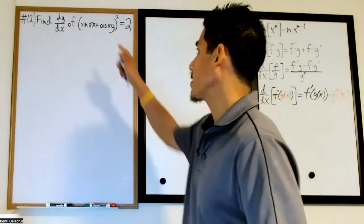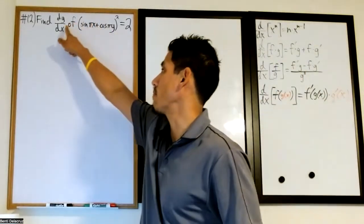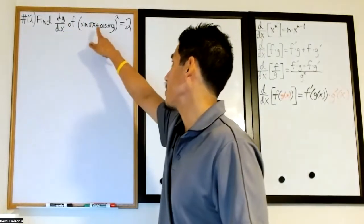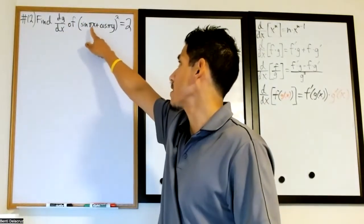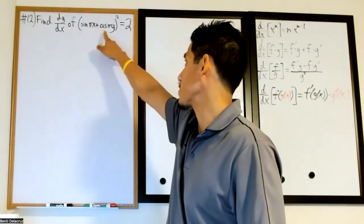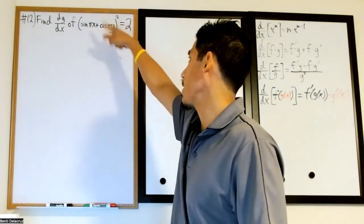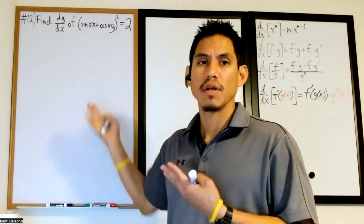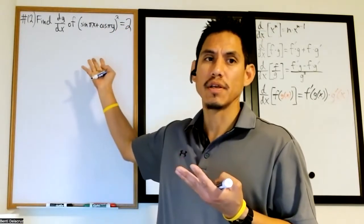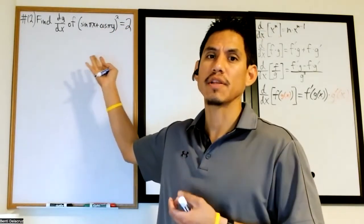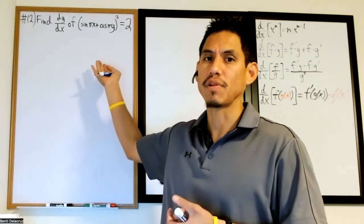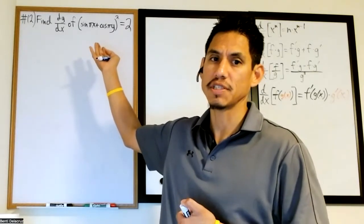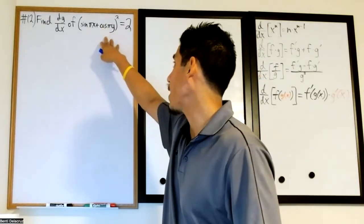We want to find the derivative of y with respect to x of the equation: the sine of πx plus the cosine of πy, all to the second power, equal to two. For an equation like this, we're going to have to apply the technique of implicit differentiation, and that's because we don't have y written in terms of x.